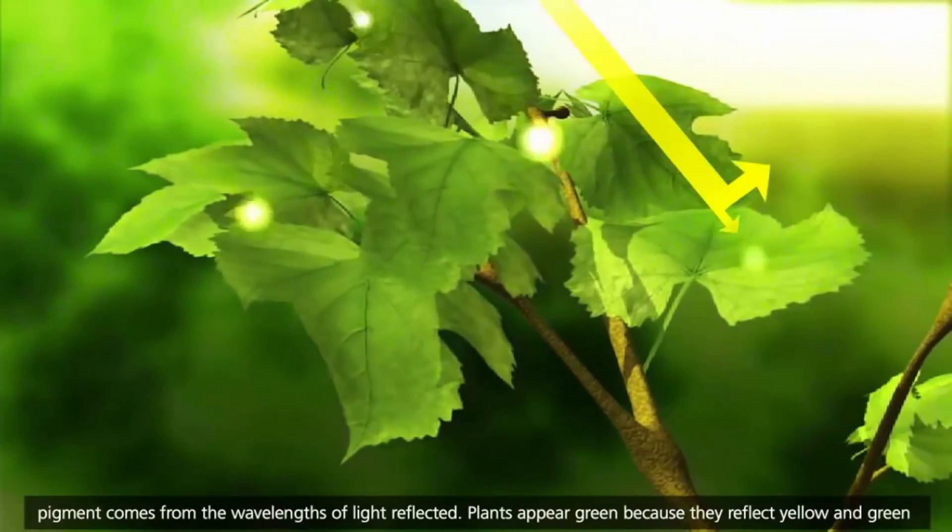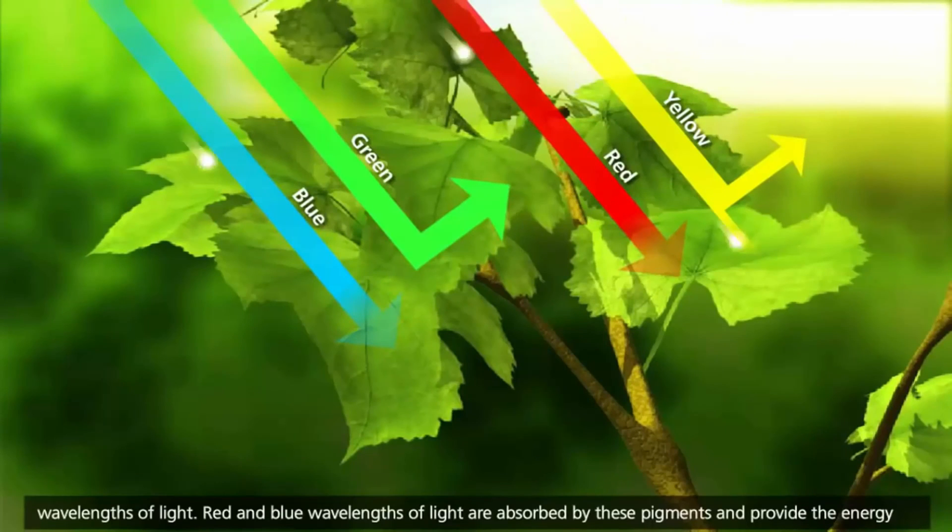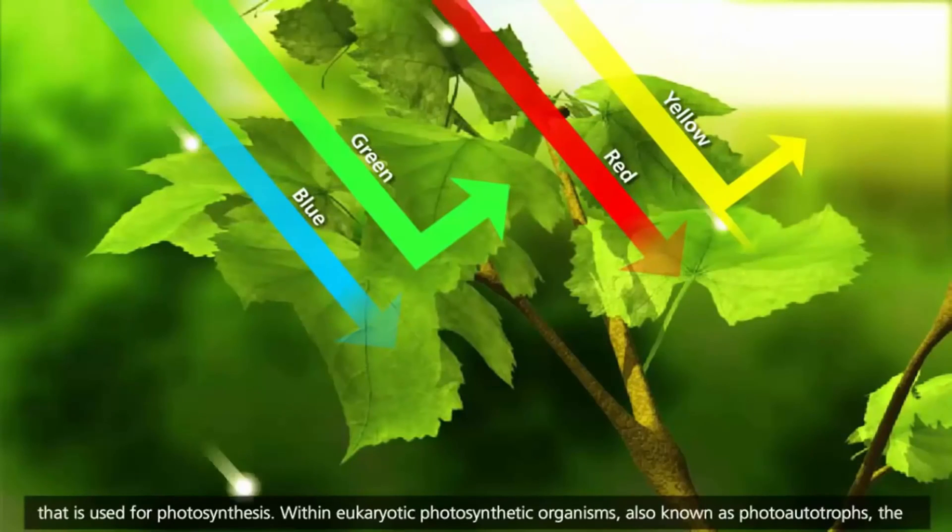Plants appear green because they reflect yellow and green wavelengths of light. Red and blue wavelengths of light are absorbed by these pigments and provide the energy that is used for photosynthesis.